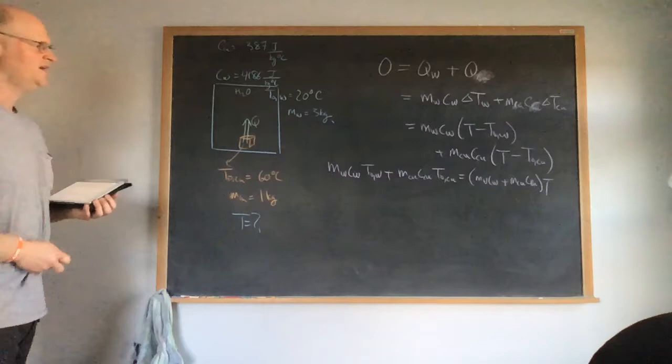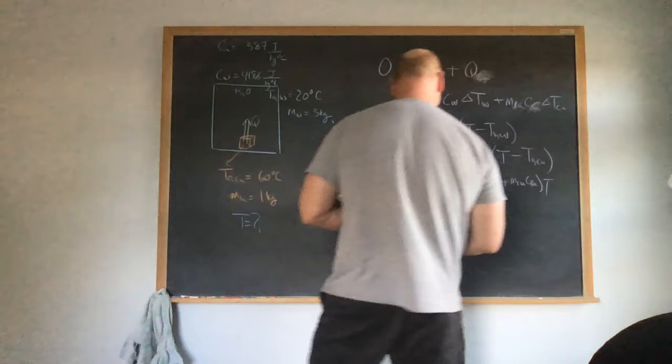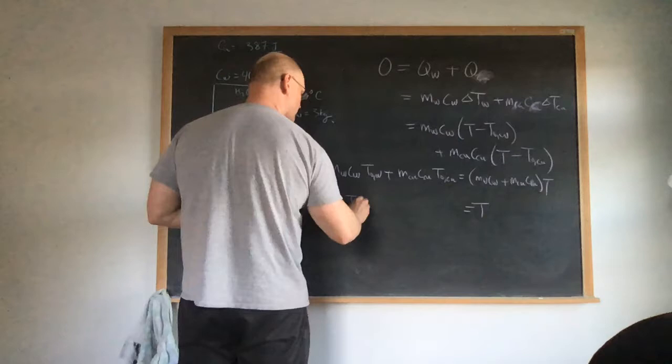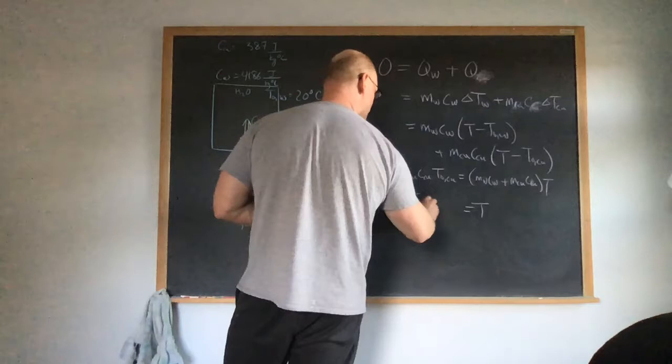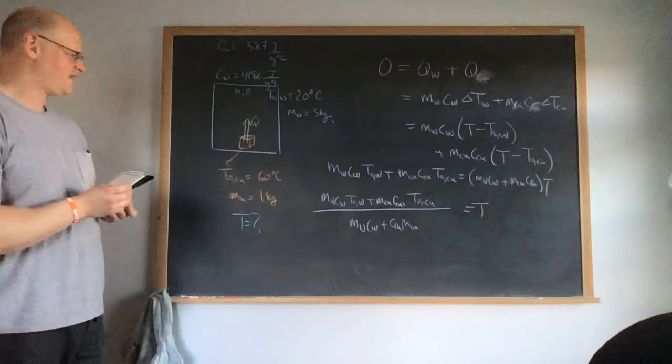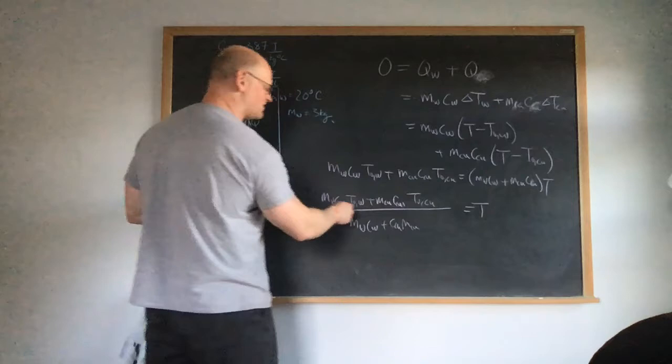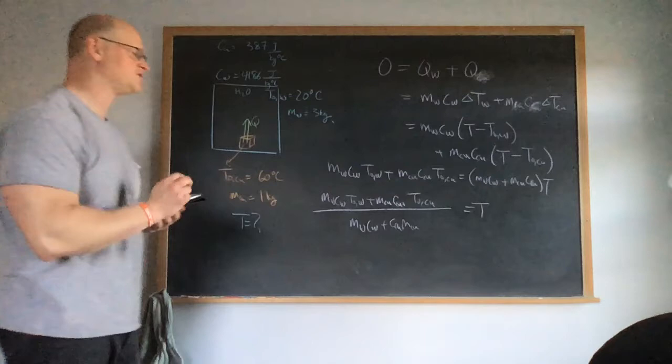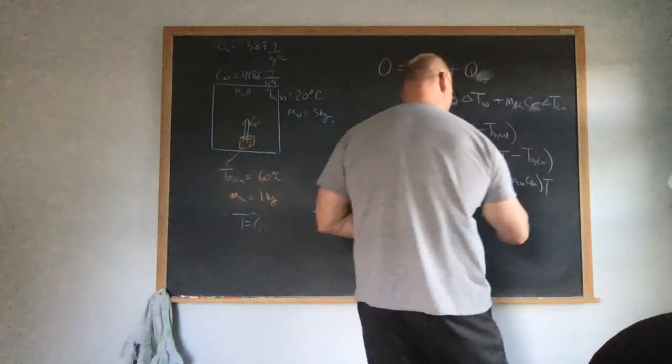Solving for the final temperature T: T = (m_water × C_water × T_water,i + m_copper × C_copper × T_copper,i) / (m_water × C_water + m_copper × C_copper). A quick dimensional analysis confirms M×C cancels, leaving temperature = temperature, so the equation is dimensionally correct. Plugging in the numbers gives a final equilibrium temperature of 21.2 degrees Celsius.